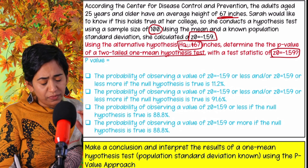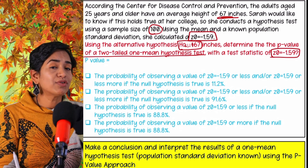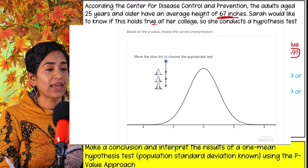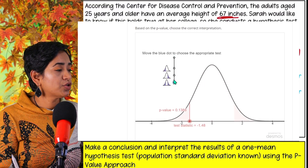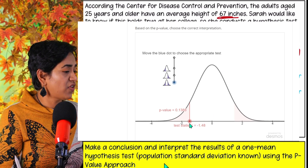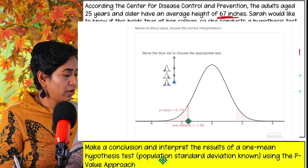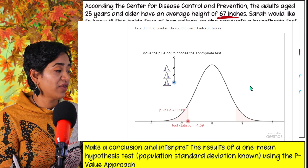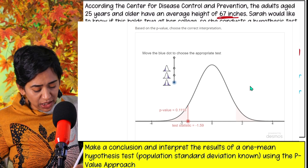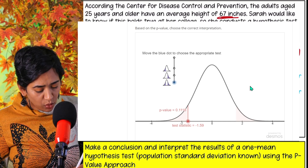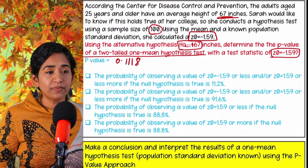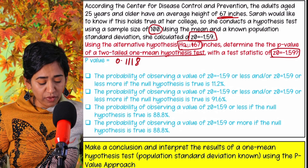We know it's a two-tailed test. I'll use the sliders to find the p-value. I click on the slider - it's a two-tailed test. Moving it to show two tails. My test statistic is negative 1.59, so I move it to negative 1.59. As soon as I move to negative 1.59, you can see there are two tails. My p-value is 0.1118.